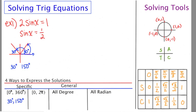But another question might say, find the specific answers between 0 and 2 pi. And that's pretty much the same idea, except they want the answers in radians. So I'm going to say pi over 6 and 5 pi over 6.